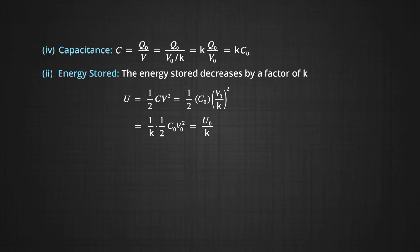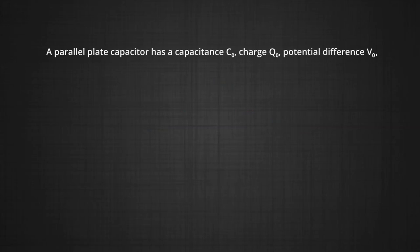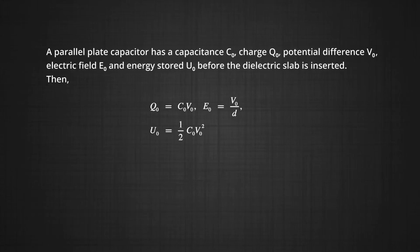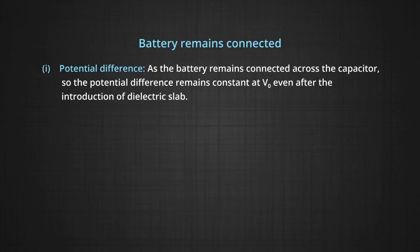Now, situation 2: the capacitor is charged, the battery remains connected, and the space between the plates is filled with a dielectric of dielectric constant K. A parallel plate capacitor has capacitance C₀, charge Q₀, potential difference V₀, electric field E₀, and energy stored U₀ before the dielectric slab is inserted. Then Q₀ equals C₀ times V₀, E₀ equals V₀ by D, and U₀ equals half C₀ times V₀ squared. The battery is still connected and a dielectric slab is introduced between the plates. As the battery remains connected across the capacitor, the potential difference remains constant at V₀, even after the introduction of the dielectric slab.